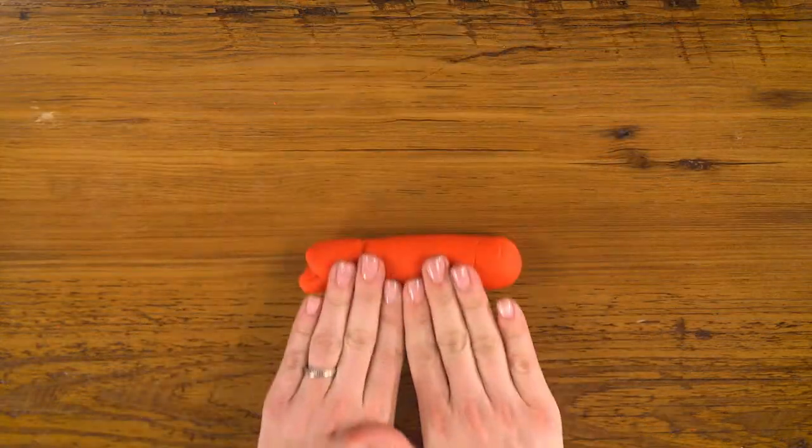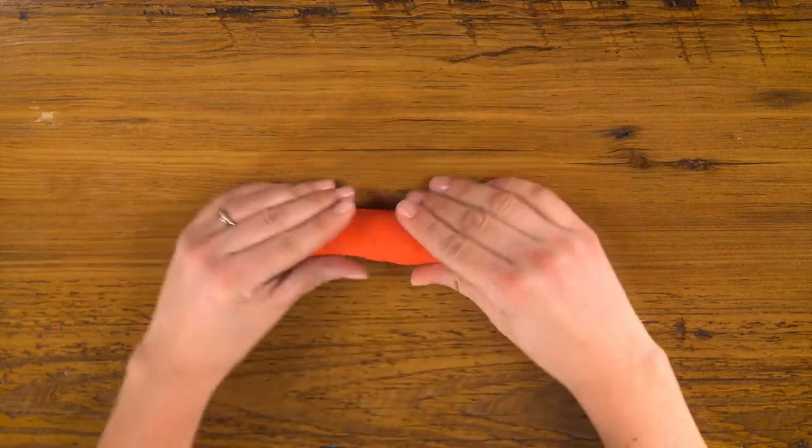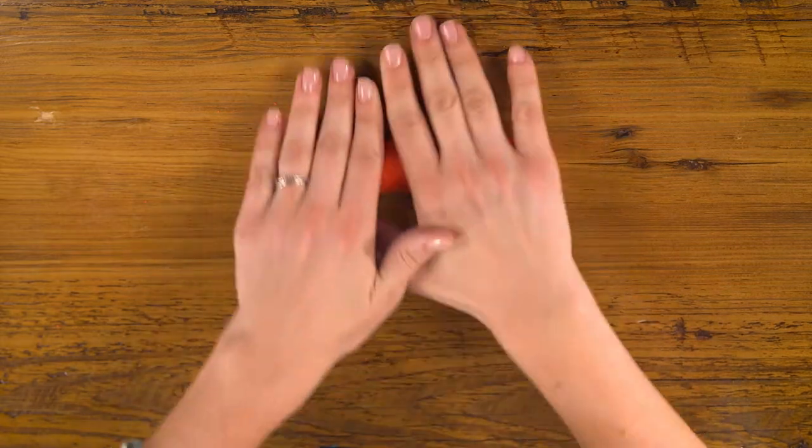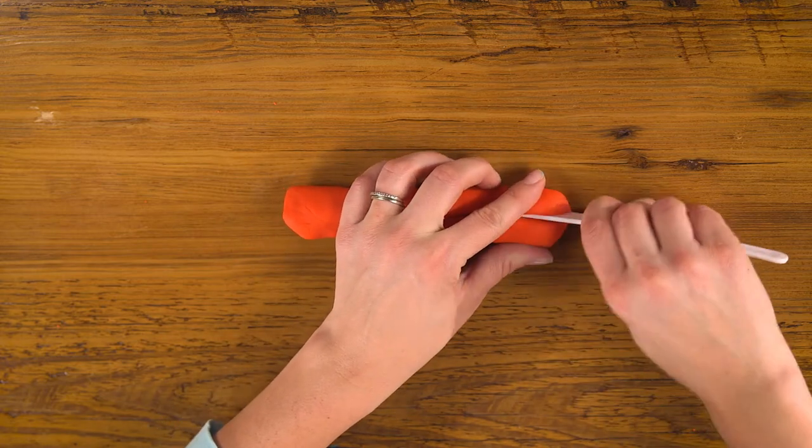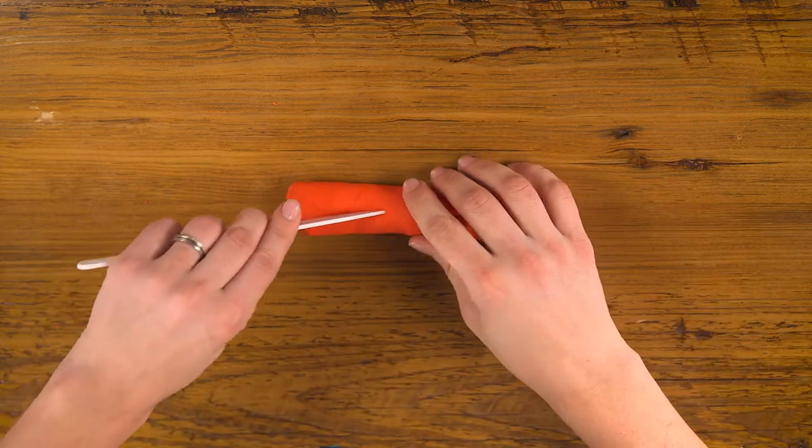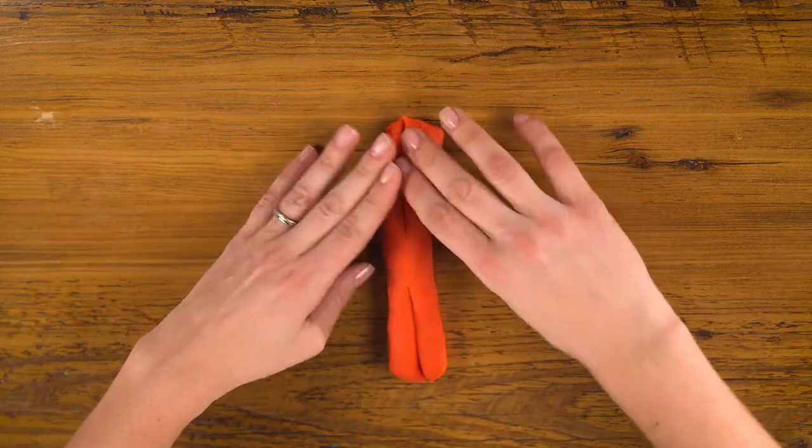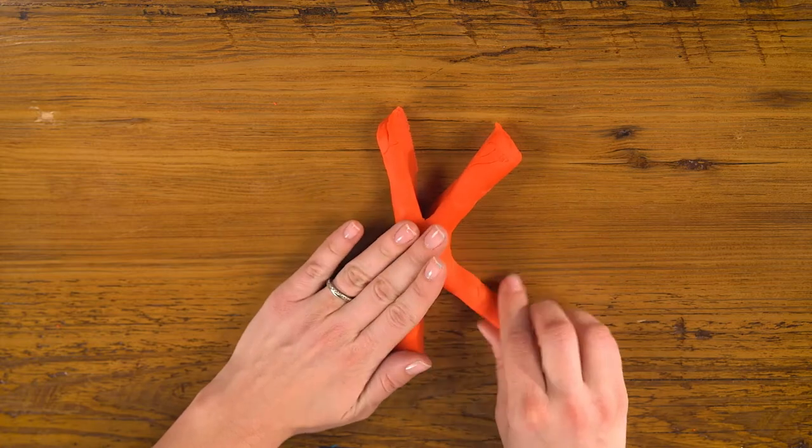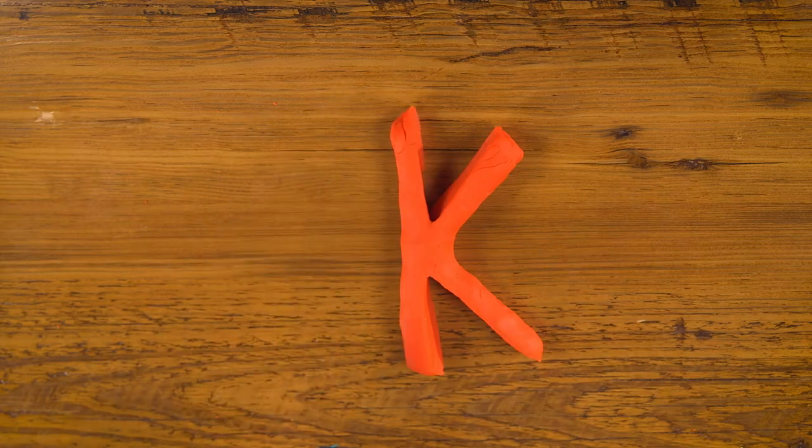Now K. So for K, I'm going to make a thicker rope than I've made before. Using my knife, I'll cut almost halfway down there and cut through the other side too. Flip it this way. Open up the legs. And there's our K.